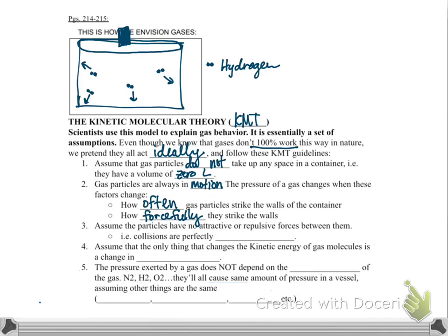Number three, we assume the particles have no attractive or repulsive forces between them and collisions are completely elastic. Even though we know intermolecular forces exist, we assume these molecules bounce into each other and the walls and bounce right back. Because if particles started sticking together, that would be less movement and cause a decrease in pressure. We assume that's never going to happen though.